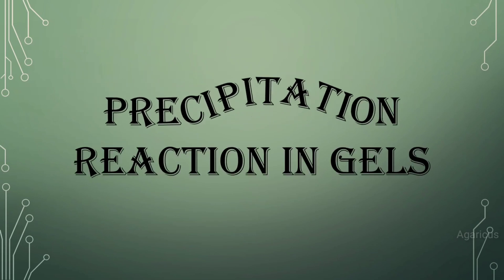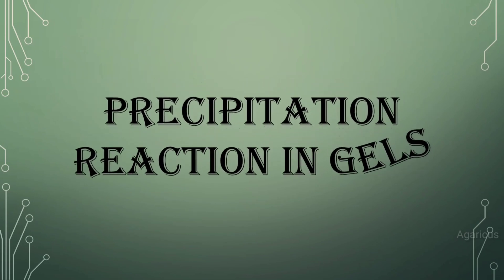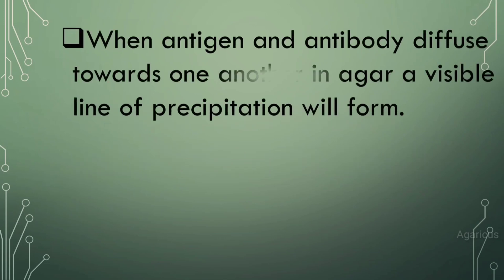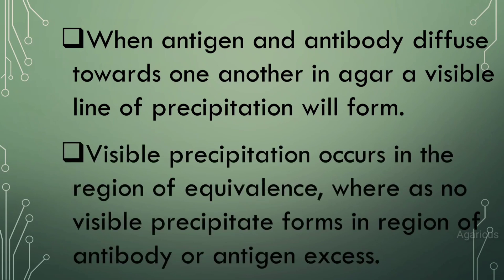Precipitation reaction in gels: when antigen and antibody diffuse towards one another in agar, a visible line of precipitation will form. Visible precipitation occurs in the region of equivalence, whereas no visible precipitate forms in the region of antibody or antigen excess.